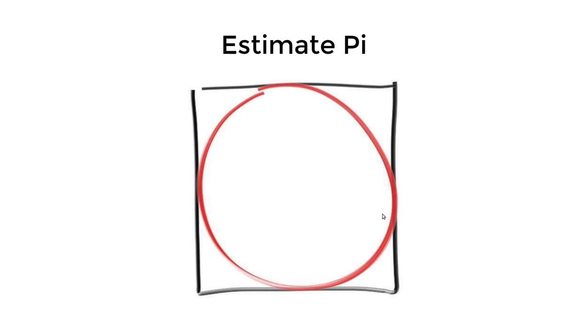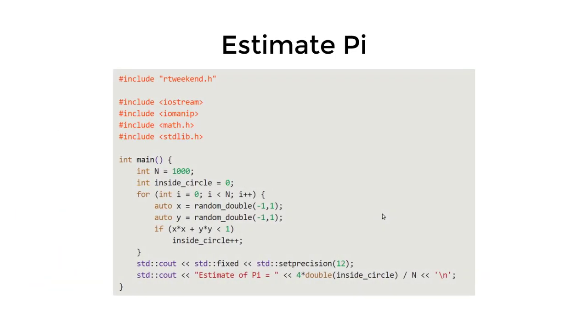We also know the area of the sphere is just pi r squared and the area of the rectangle is 4r squared. So with all that information, we can estimate pi by saying the number of points inside the sphere divided by the total number of points and then times 4 is our pi. That's just some basic algebra I will not go through.